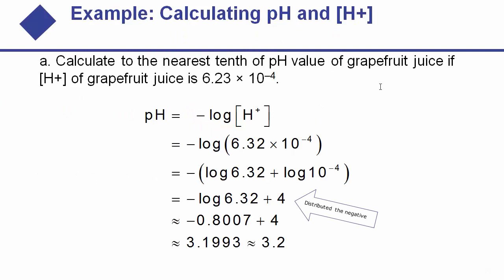Here is a simple example. Calculate to the nearest tenth the pH value of grapefruit juice, given that the number of hydrogen ions in moles per liter of the liquid is 6.23 times 10 to the negative 4. All you have to do is plug everything into the basic formula. You are essentially taking the log of that value.